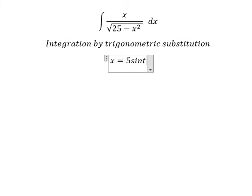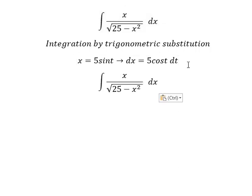We use x equals 5 sine t because when we substitute this, we get 25 sine squared t. For the expression under the radical, we factor out 25 and use the identity 1 minus sine squared t equals cosine squared t. We simplify the square root, and dx becomes 5 cosine t dt.